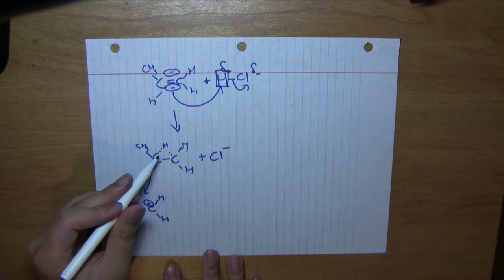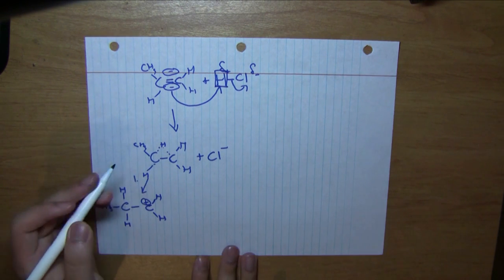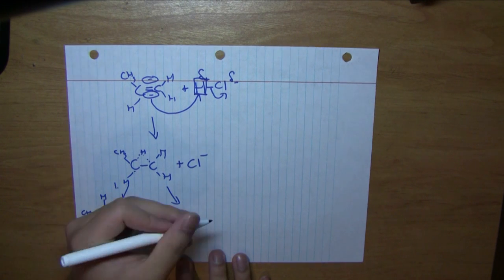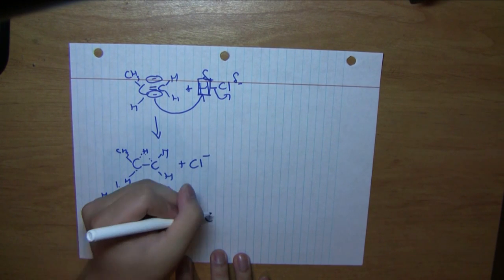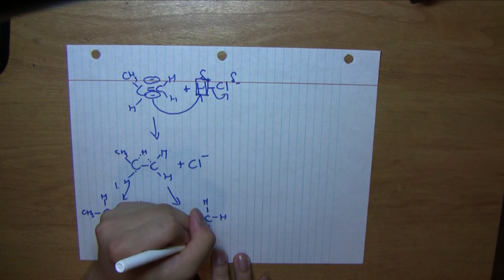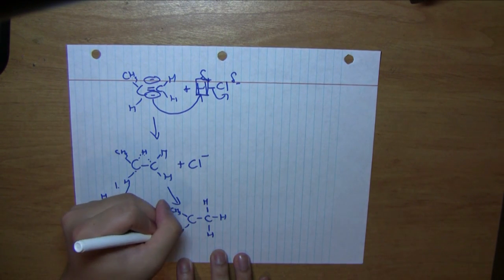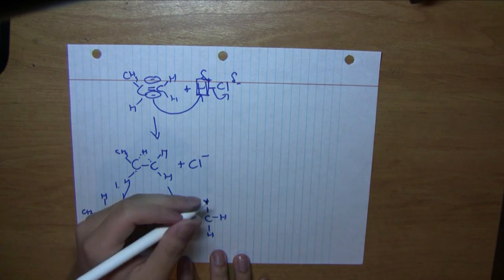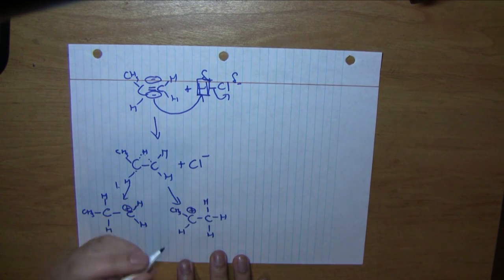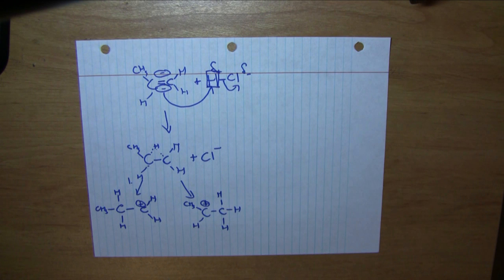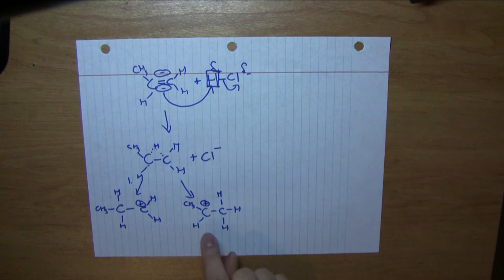Now what if we have the proton attack the right carbon? The right carbon would have three hydrogens attached to it, while the left carbon would have a methyl group and one hydrogen. Again, because it only has three valence electrons, it has a formal charge of plus one on that carbon.